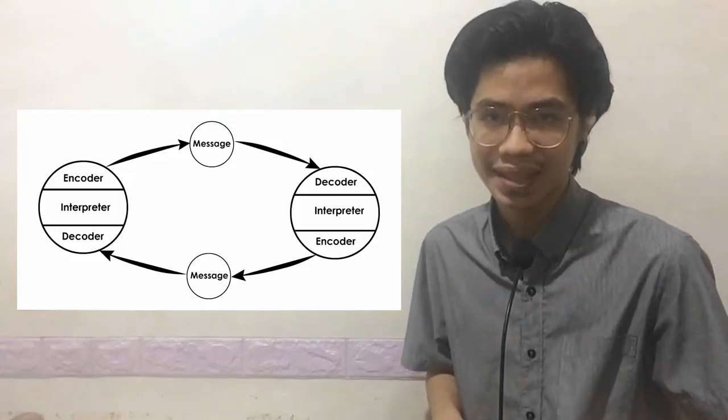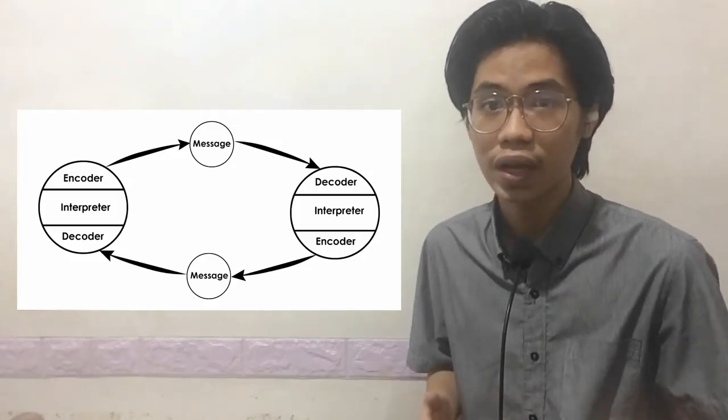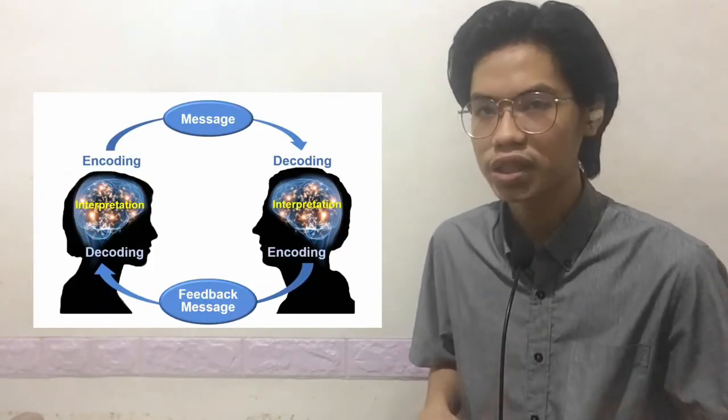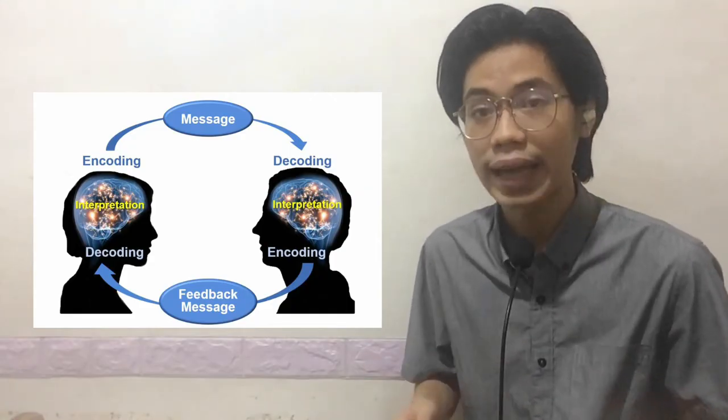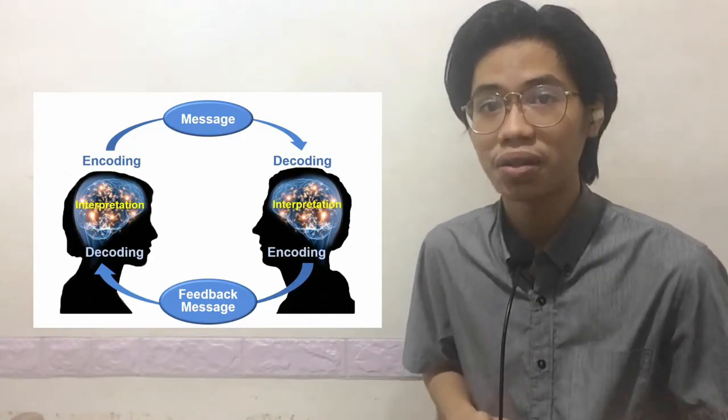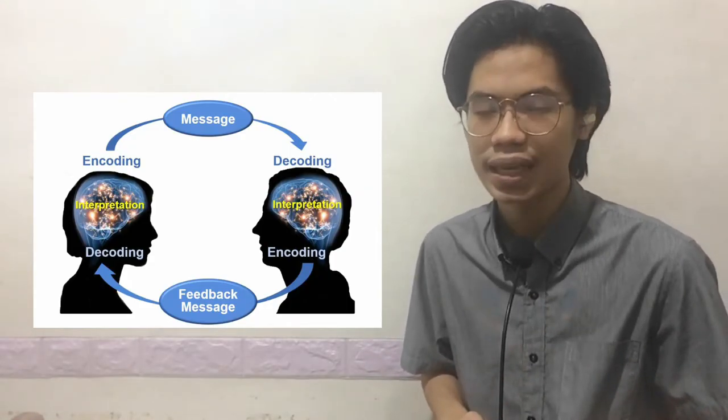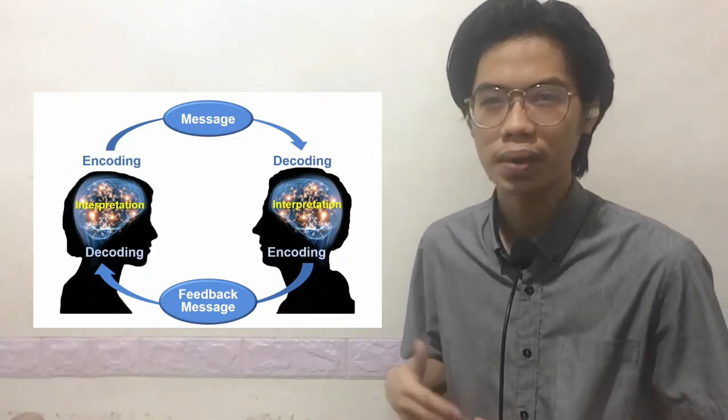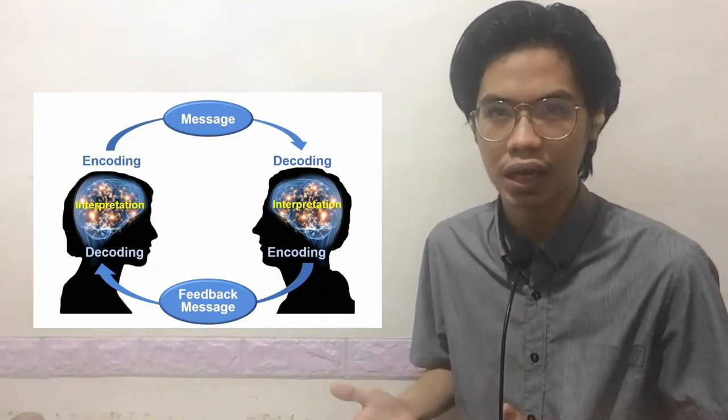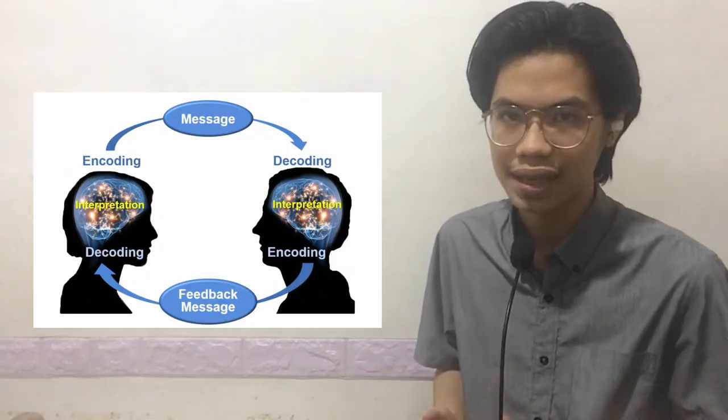Also, the model stresses that messages require interpretation, in which encoding, decoding, and interpreting are the three steps for communication. It showcases that humans are active communicators and that communication is complex.